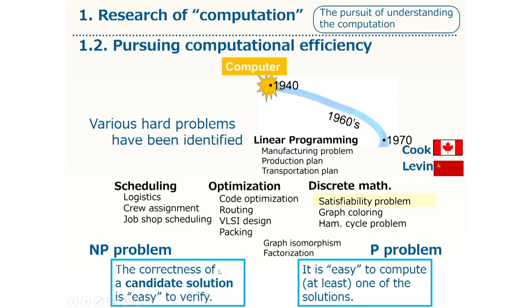With this method, Cook, for example, mathematically proved that the satisfiability problem is the hardest problem, in some sense, among all NP problems.